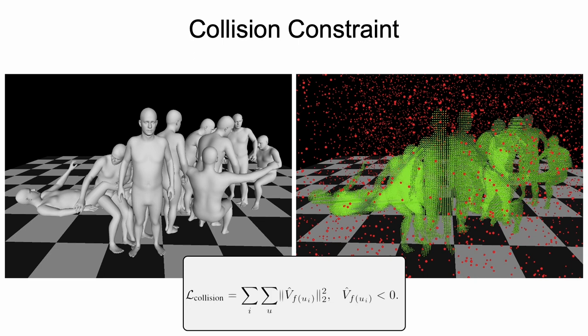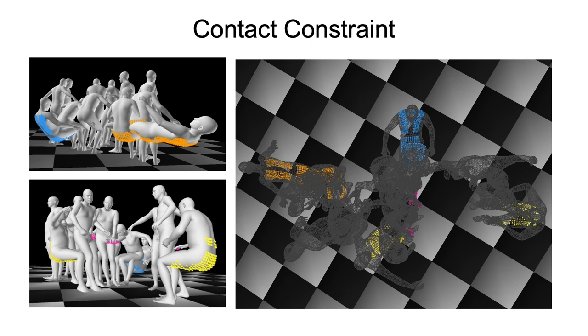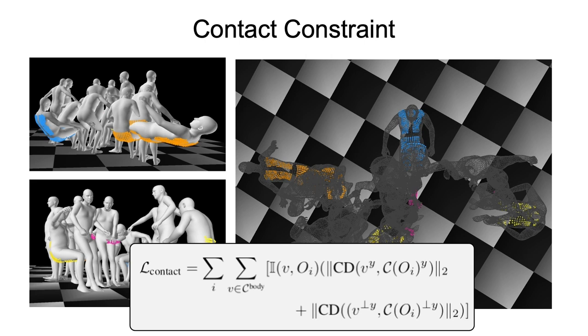Third, contact constraint. When humans and objects are in contact, the contact surfaces occupy the same place in space. We directly assign the contacted body vertices of each body to different objects. We minimize the distance between the contacted bodies and the contacted object parts.